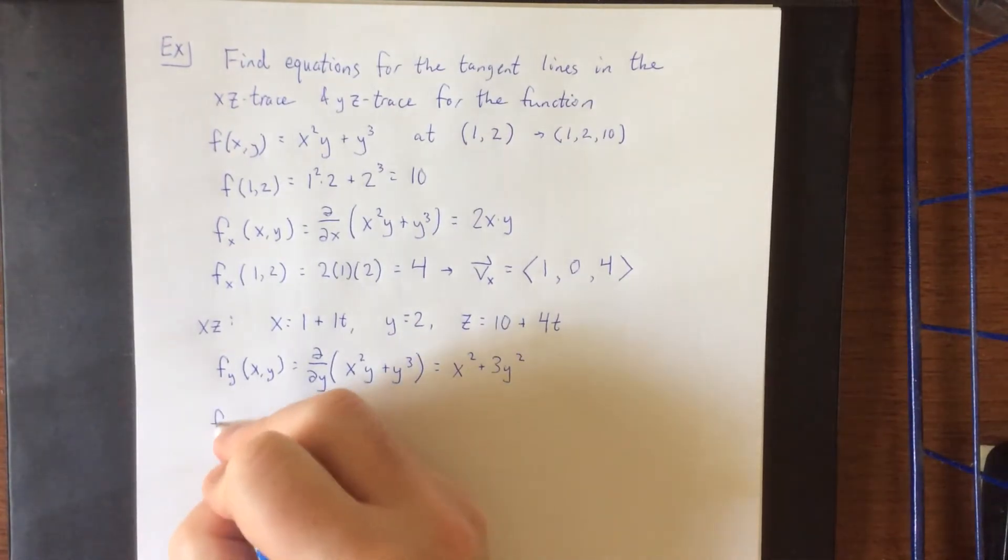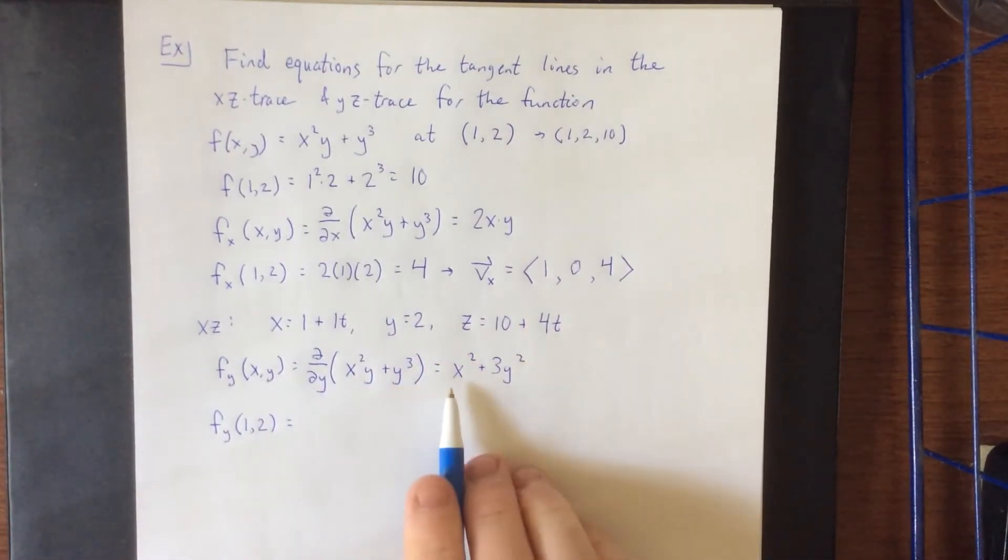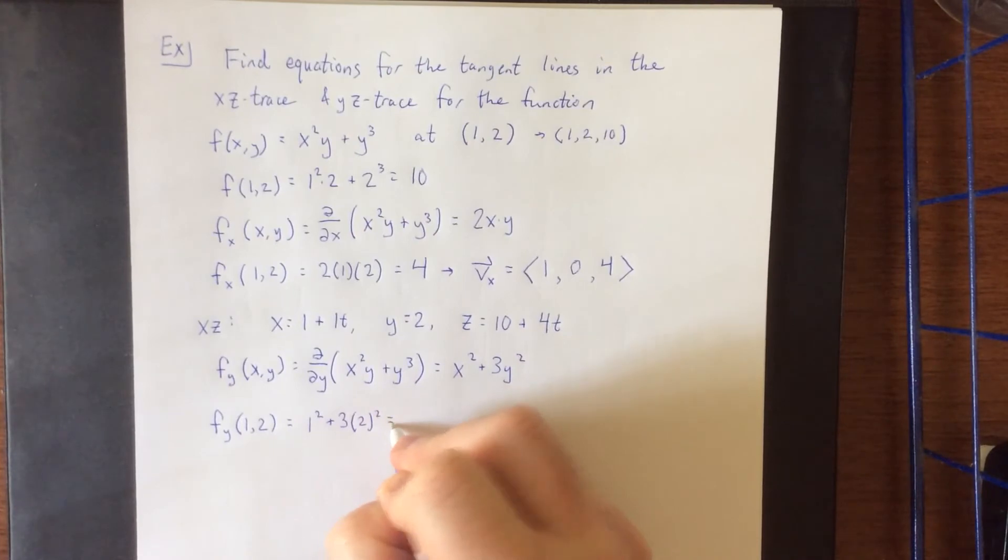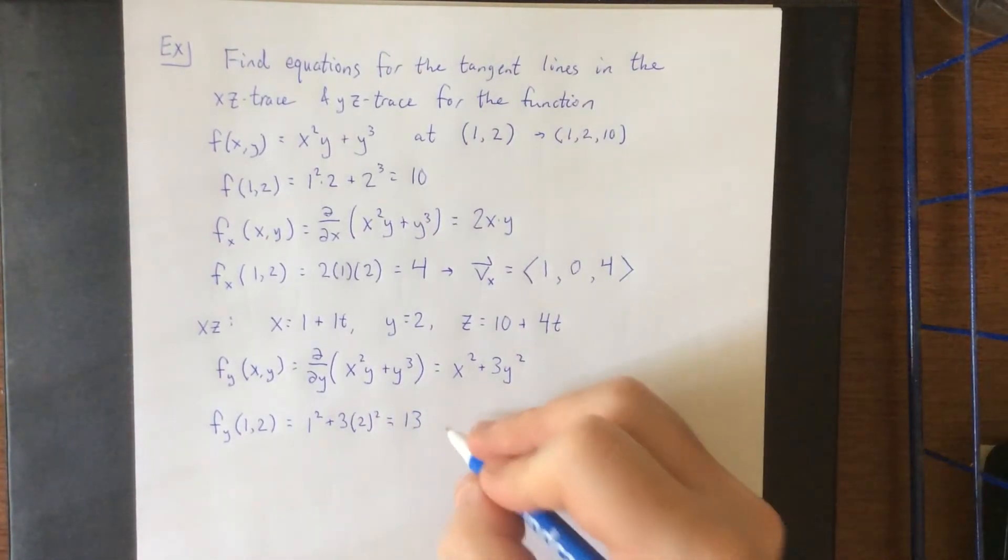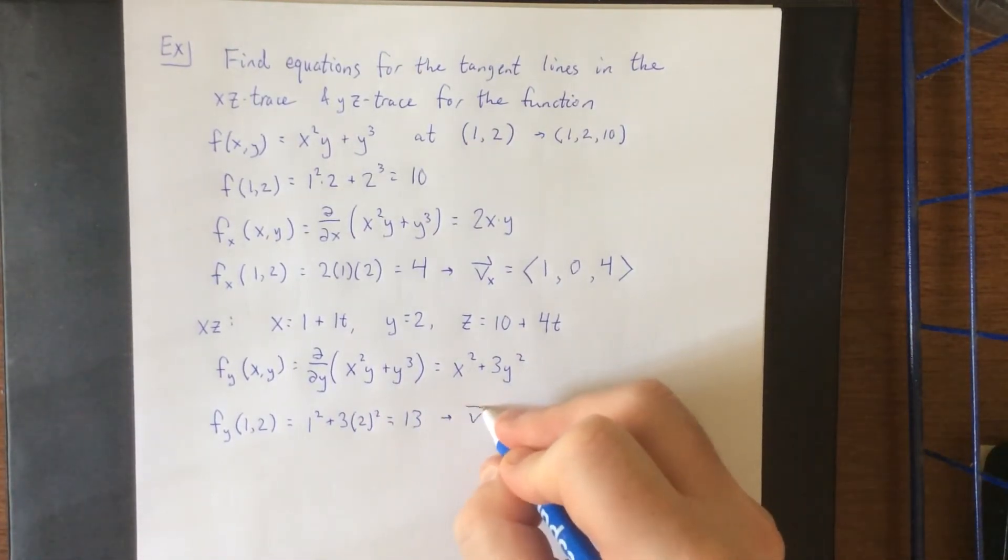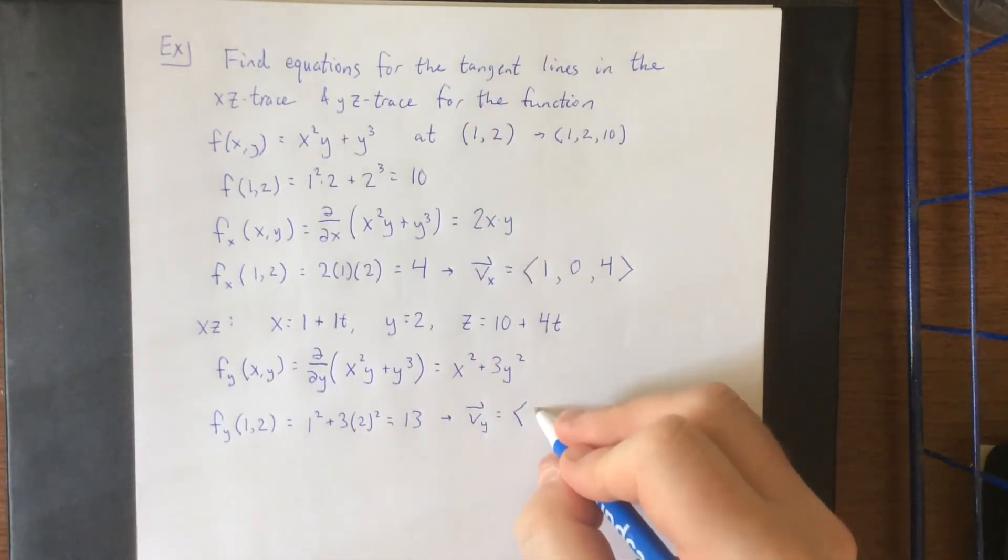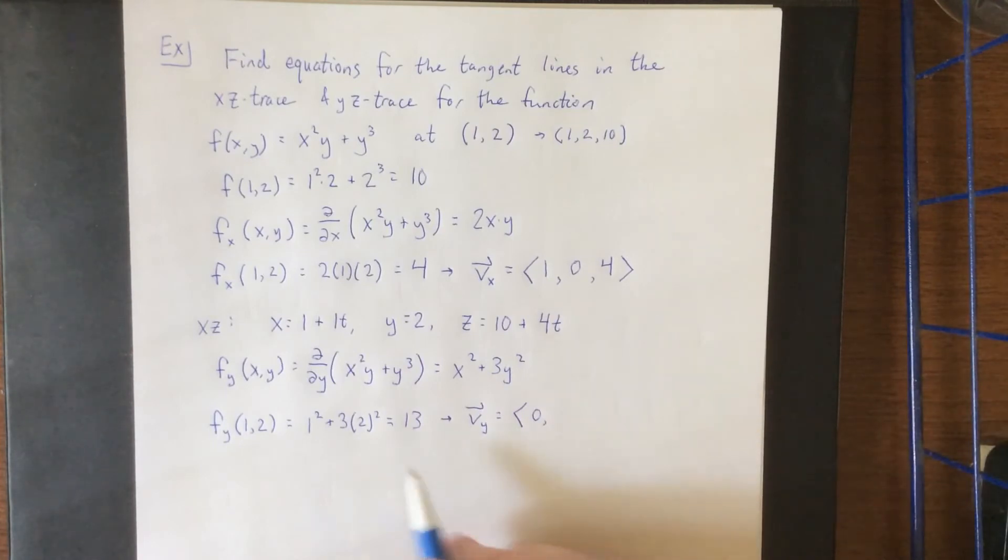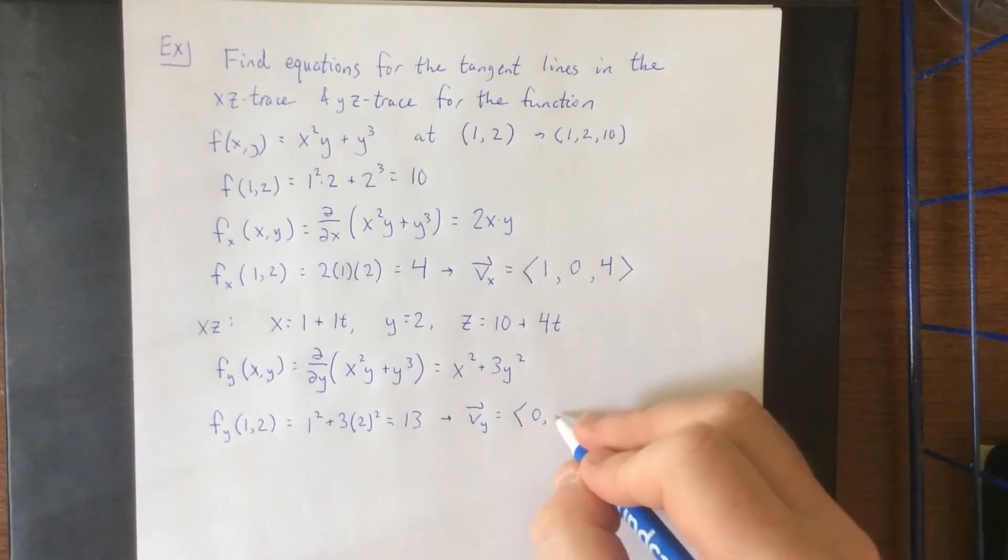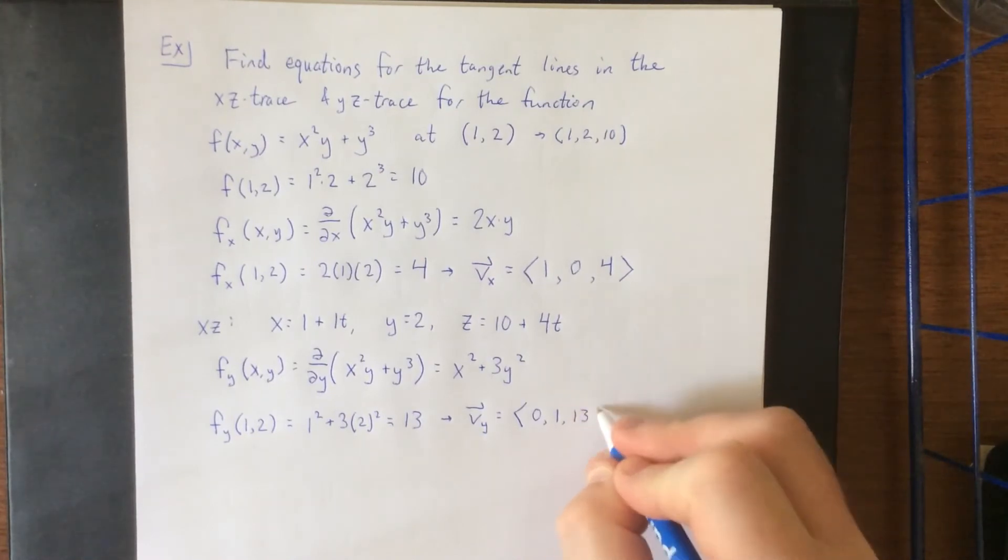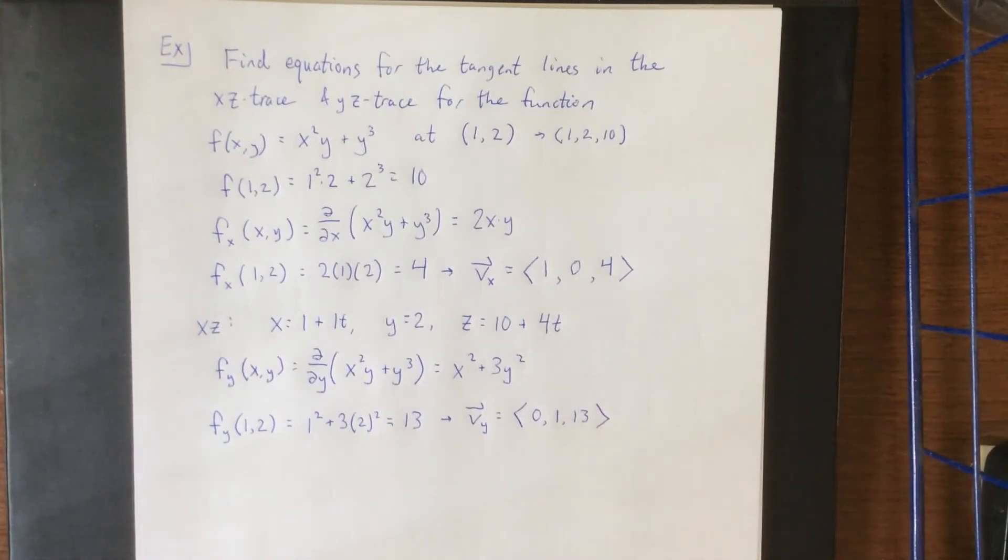Plugging in the given point of (1,2) to our new partial derivative. This will be 1 squared plus 3 times 2 squared for a total of 13. We can interpret this direction vector as the following. We're holding x to be constant so change in x would be 0 and for every 1 unit that y changes z is changing by 13 units. That is the interpretation of slope.